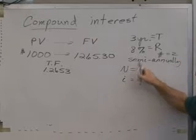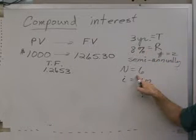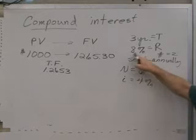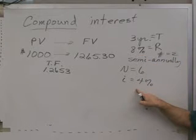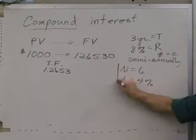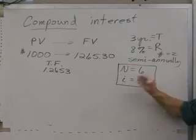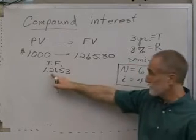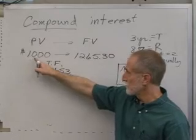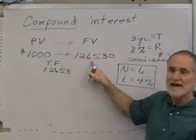we said that we'd have 3 times 2, we'd have 6 total periods, we'd have 8 divided by 2, we'd get 4% each time. So we looked up N and I in our future value table, we found this table factor, and we multiplied 1,000 times the table factor.